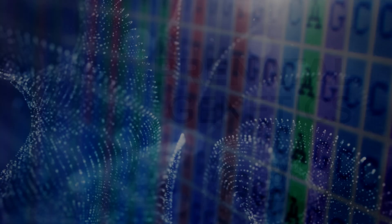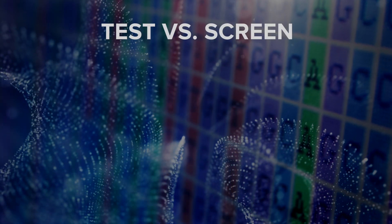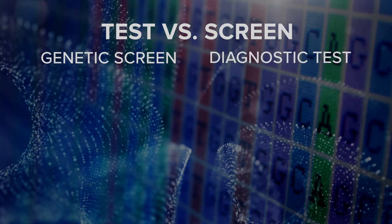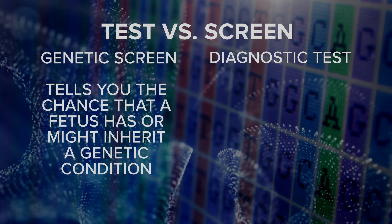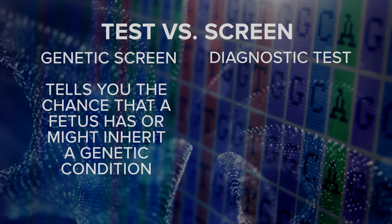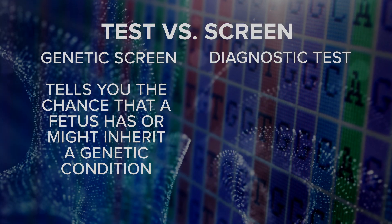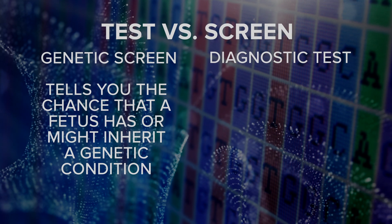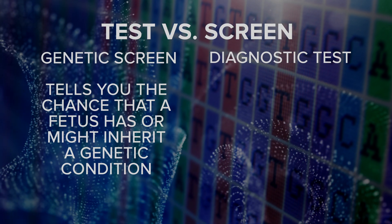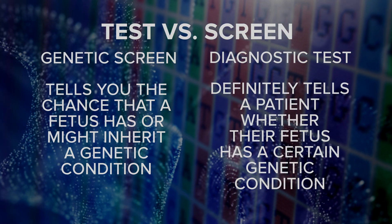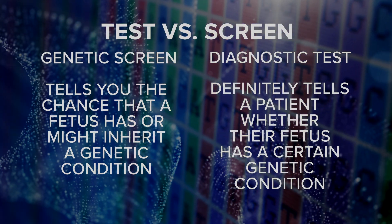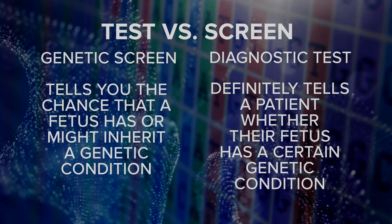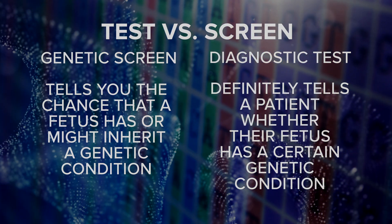There are two main types of prenatal genetic procedures available: genetic screens and diagnostic tests. A genetic screen tells you the chance that a fetus has a condition, or the chances that an unconceived fetus might inherit a genetic condition. A diagnostic test, on the other hand, is much more definitive — it can tell a patient whether their fetus has certain genetic conditions.